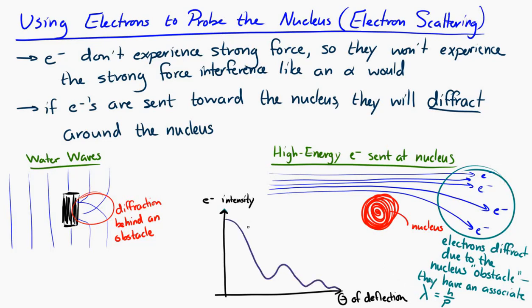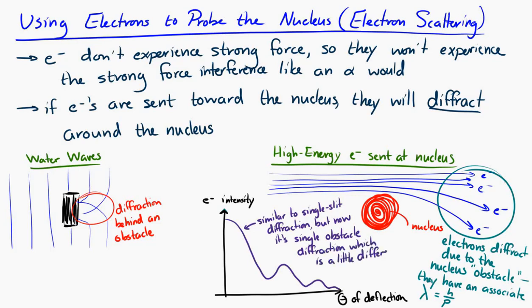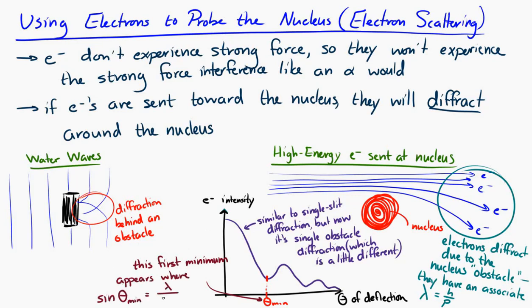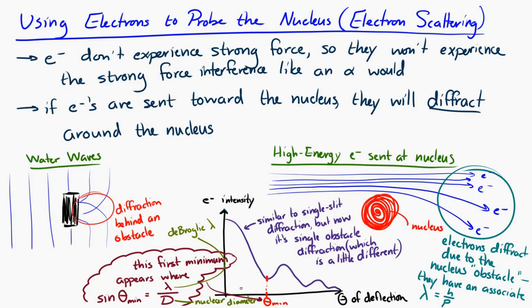This pattern is similar to single slit diffraction, but it's actually single obstacle diffraction — kind of the inverse. The minimum in electron intensity appears where sin(θ) = λ/D, where λ is the de Broglie wavelength of the incoming electrons and D is the diameter of the nucleus. So from this graph we're able to estimate the diameter of a nucleus using incoming electrons.